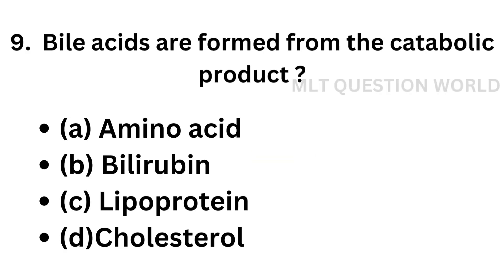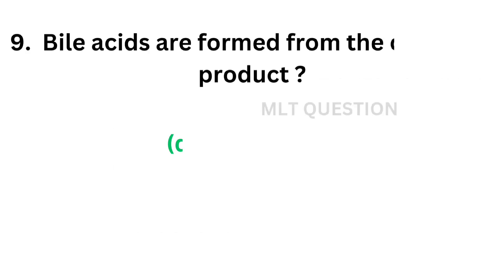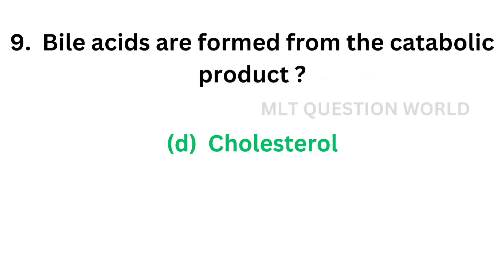Question number 9. Bile acids are formed from the catabolic product of: option A, Amino acid; option B, Bilirubin; option C, Lipoprotein; option D, Cholesterol. The correct answer is option D, Cholesterol. Bile acids are formed from cholesterol.